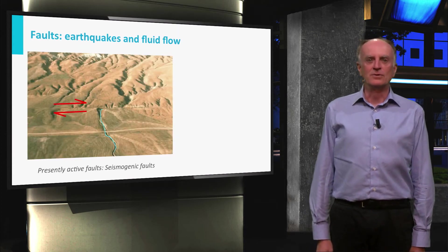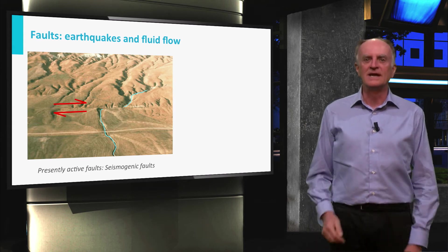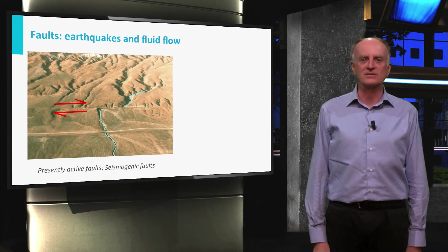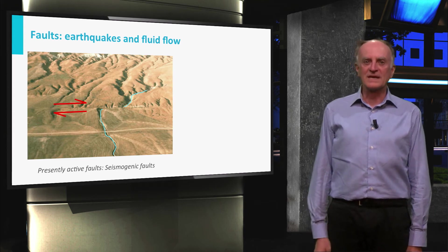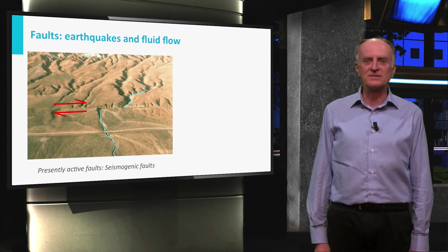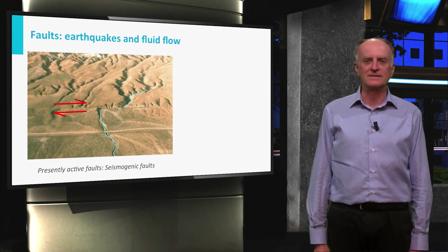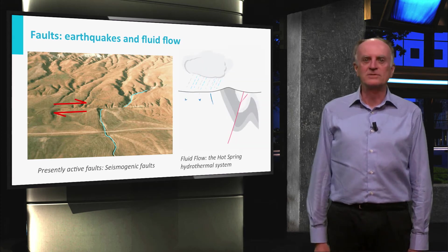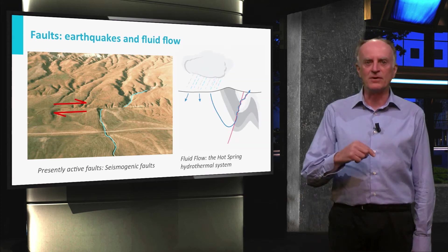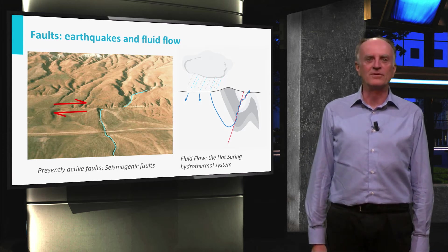Faults are zones of high deformation which accommodate substantial displacement. Faults are features of great importance in geology. Faults can be active at present and, like in the case shown, even displaced riverbeds. These faults are often associated with earthquakes. Faults are also of crucial importance in fluid flow. Most of the hot waters feeding thermal baths move upward along faults.